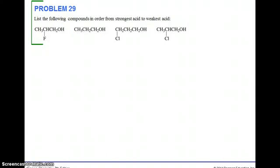Problem 29, list the following compounds in order from strongest to weakest acid. We need to look for the differences. They all have three carbons and an OH. Three of them have substituents. The one that does not have a substituent is going to be the weakest acid. So I'm going to put that over here.